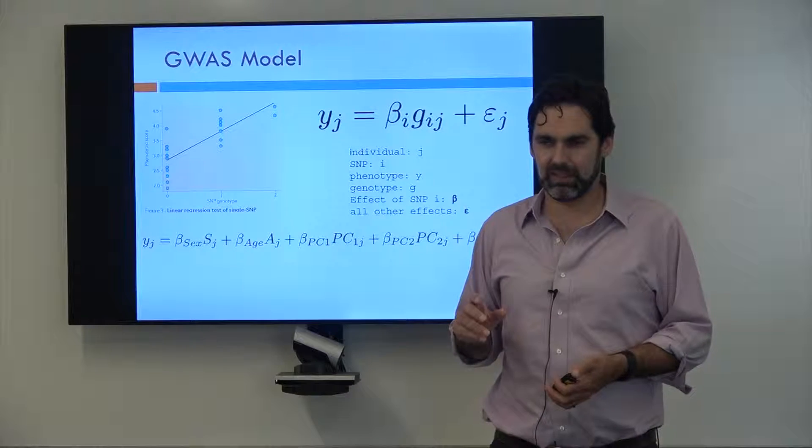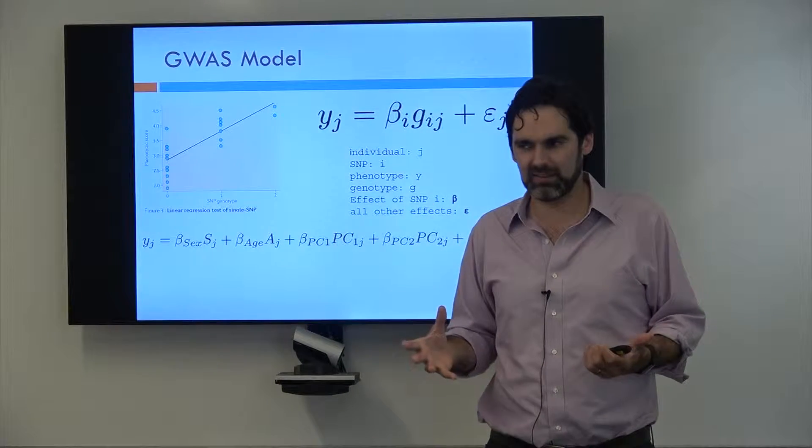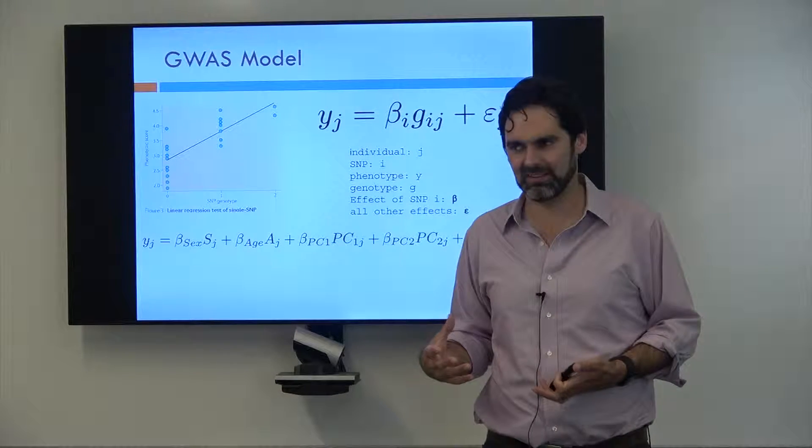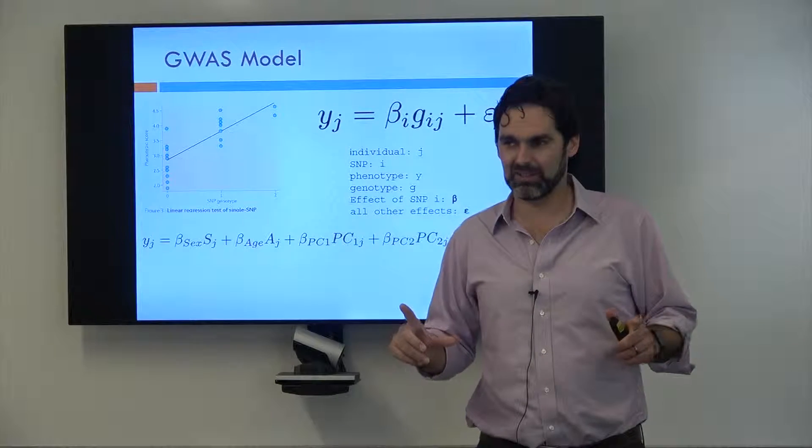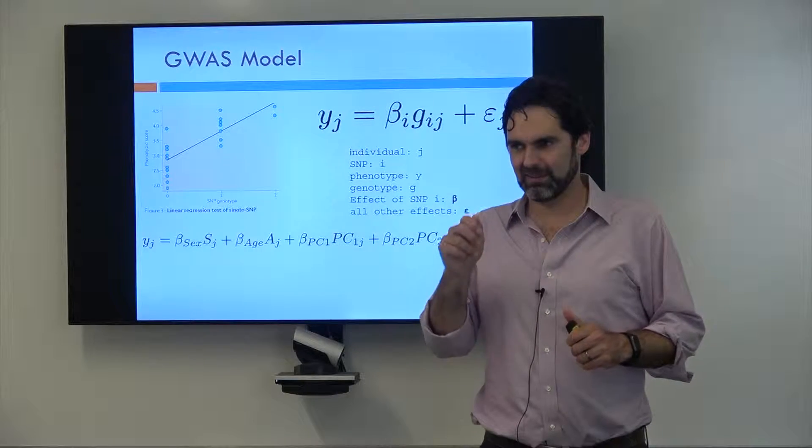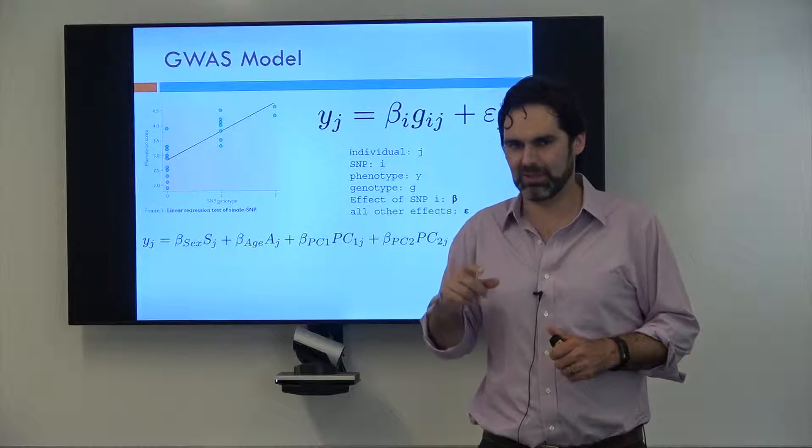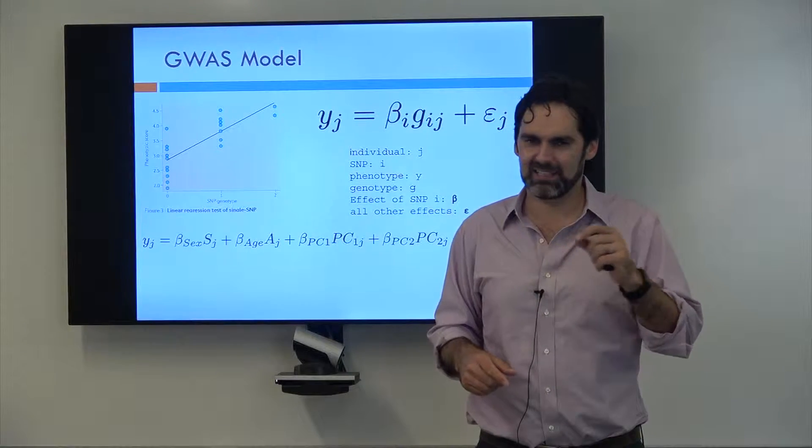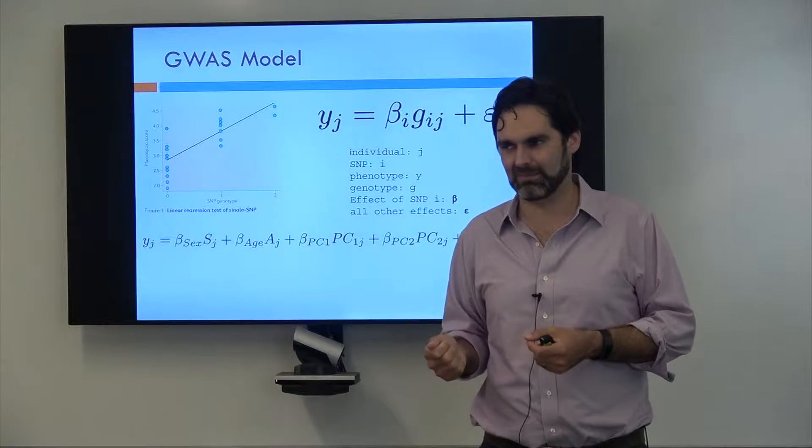If you look at Europeans and you take a whole bunch of Europeans and look at their genotype matrix and calculate the first two principal components, you can make a plot of Europe and the people will show up on that plot looking like Europe. The first principal component basically tells you how far north and south you are in Europe, and east and west is given by the second principal component.